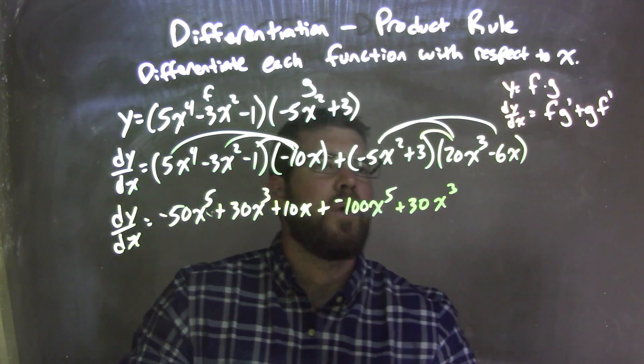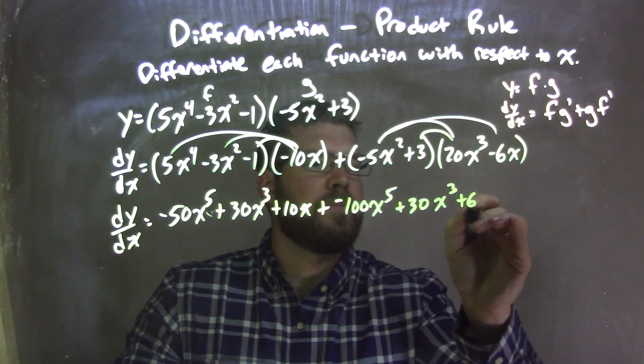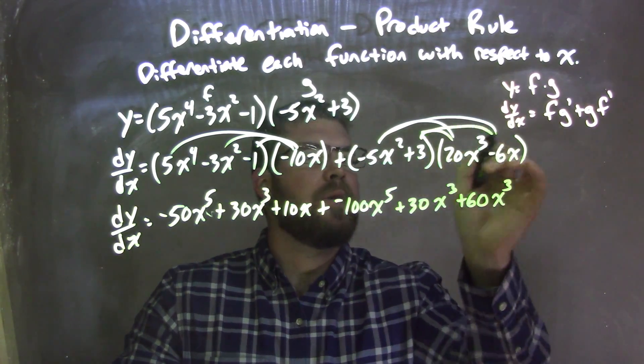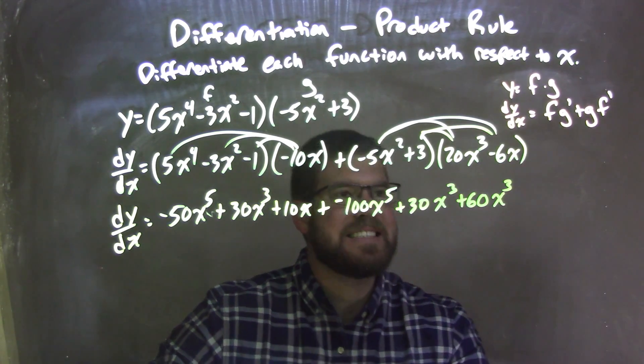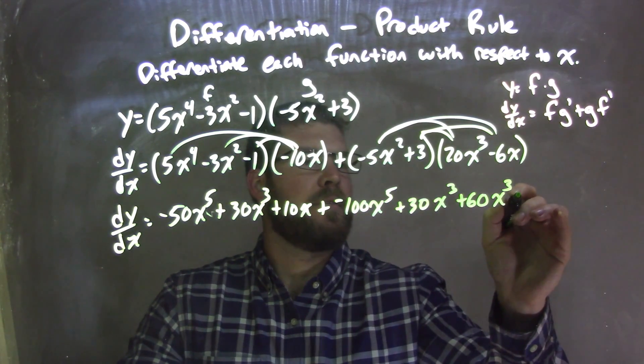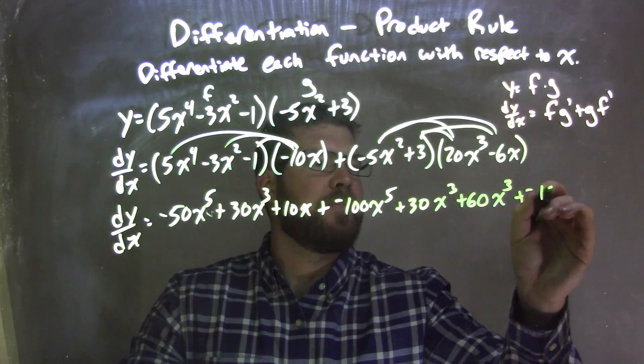3 times 20x to the 3rd is 60x to the 3rd, and 3 times negative 6x is negative 18x.